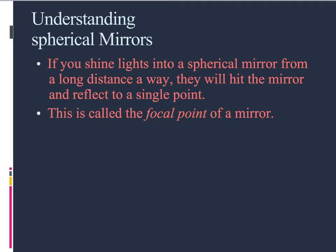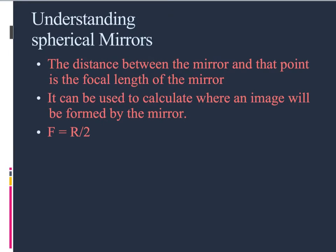When you shine light into a spherical mirror from a long distance away, the rays hit the mirror and reflect to a single point. This is the focal point of the mirror, denoted by capital F. The distance between that point and the mirror is the focal length, denoted lowercase f. The focal point can be used to calculate where an image will be formed by the mirror, and it turns out that the focal length equals the radius divided by 2.